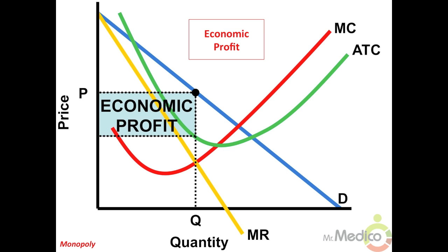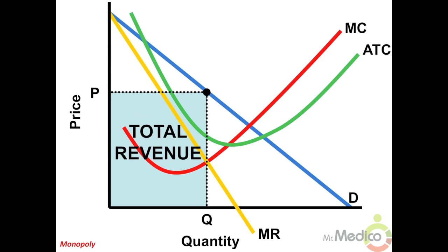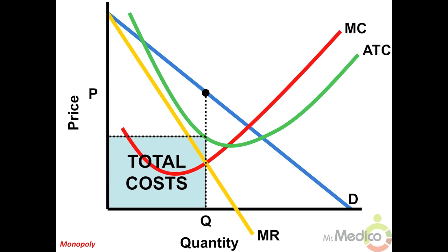The monopolist will produce in the elastic region of its demand curve. In this region, marginal revenue is greater than zero. This graph shows the area of economic profit. This next graph shows the area of total revenue at the profit-maximizing level of output.